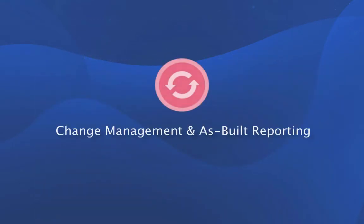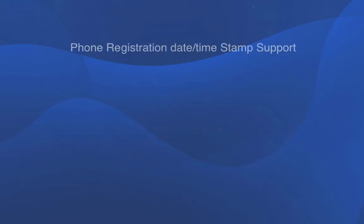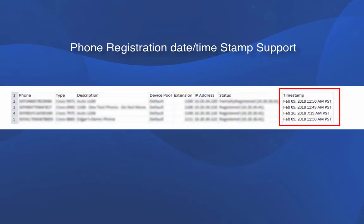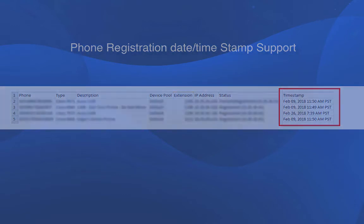Change management and as-built reporting. In 11.2, we've added a phone registration date and timestamp report for phones which are in the registered, partially registered, or unregistered state. This will be shown in as-built reporting for IP phone registration, as well as in search results for remote phone control.